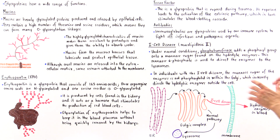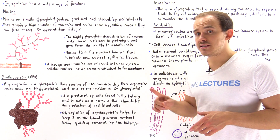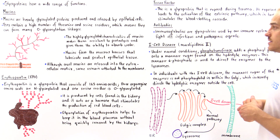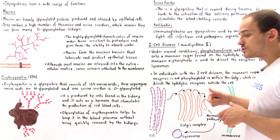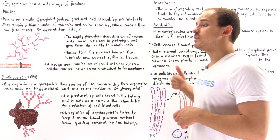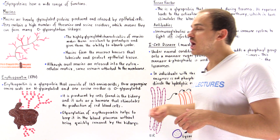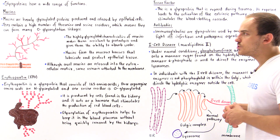At the end of the lecture, I'd also like to discuss an example of a disease known as the I-cell disease that exists in humans, which basically demonstrates the importance of protein glycosylation.